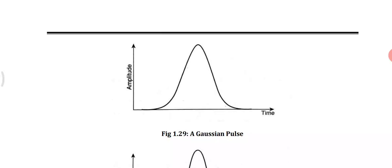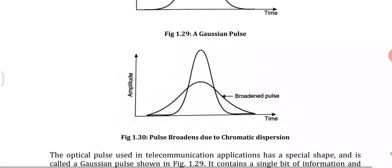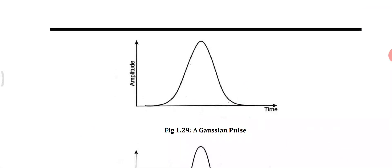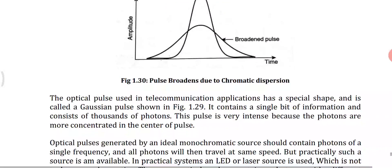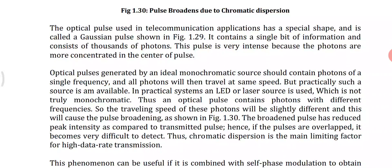The x-axis is time and the y-axis is amplitude. Due to chromatic dispersion, the pulse is broadly spread across the medium and the amplitude is reduced. The optical pulse used in telecommunications has a special shape called a Gaussian pulse. This pulse passes through the optical fiber and contains a single bit of information consisting of thousands of photons. The photons are more concentrated at the center of the pulse, making it very intense.